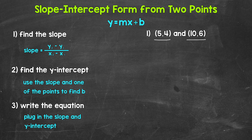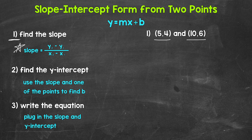This may seem confusing at first, but after our examples it's going to make more sense. We're going to use three steps. Our first step: we need to find the slope of our line. Remember, slope equals rise over run — the vertical change over the horizontal change. When given two points, we can use the formula: slope equals y2 minus y1 over x2 minus x1. So y2 minus y1 gives us the rise, and x2 minus x1 gives us the run.